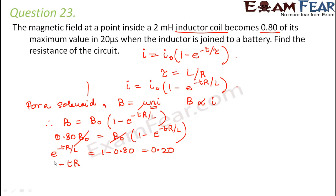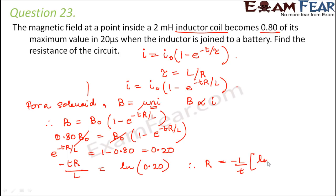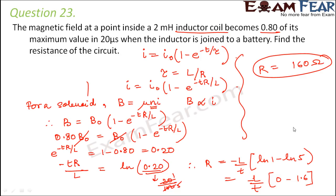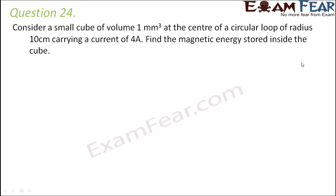Taking natural log on both sides: −tR/L = ln(0.20). Therefore R = −(L/t) × ln(0.20). Writing 0.20 as 1/5, ln(1/5) = ln 1 − ln 5 = 0 − 1.6 = −1.6. So R = (L/t) × 1.6 = 160 ohms.